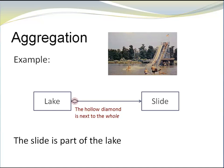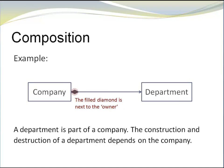That's different from our example of the slide. We can build a slide, create a man-made lake, bring the slide to the lake. Now the slide is part of the lake. The existence of the slide is independent of the existence of the lake. The existence of the department depends on the existence of the company. That's the difference between aggregation and composition.